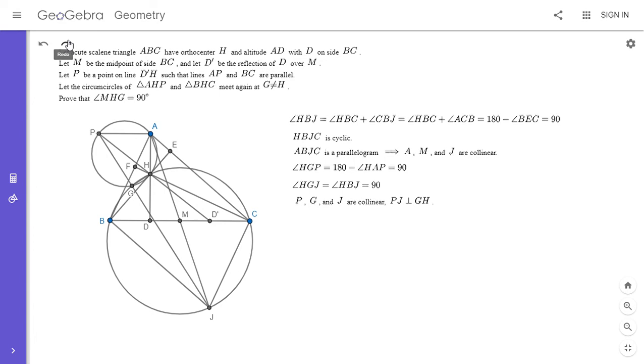I'm going to write this out. This is what I mentioned before: PJ has to be perpendicular to GH because we showed angle HDJ is 90 degrees. Now I'm going to draw that line HM, and I'm going to let it cut the segment AP at a point Q.